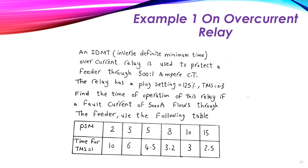Let's have an example on an overcurrent relay — an Inverse Definite Minimum Time (IDMT) relay, which means it is inverse and then converts to a definite minimum time. This overcurrent relay is used to protect a feeder through a 500-to-1 ampere current transformer (CT).